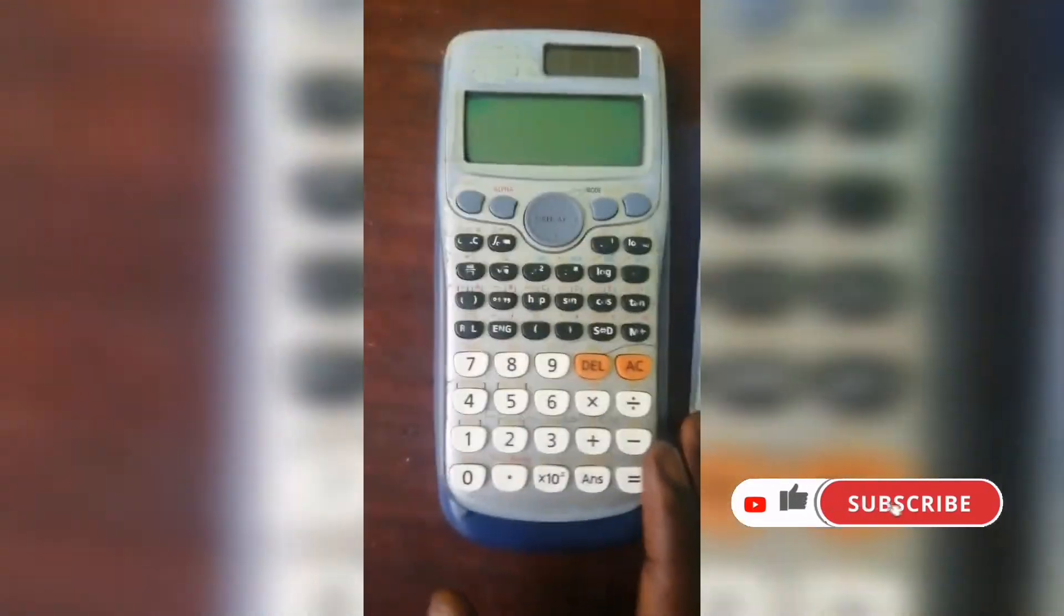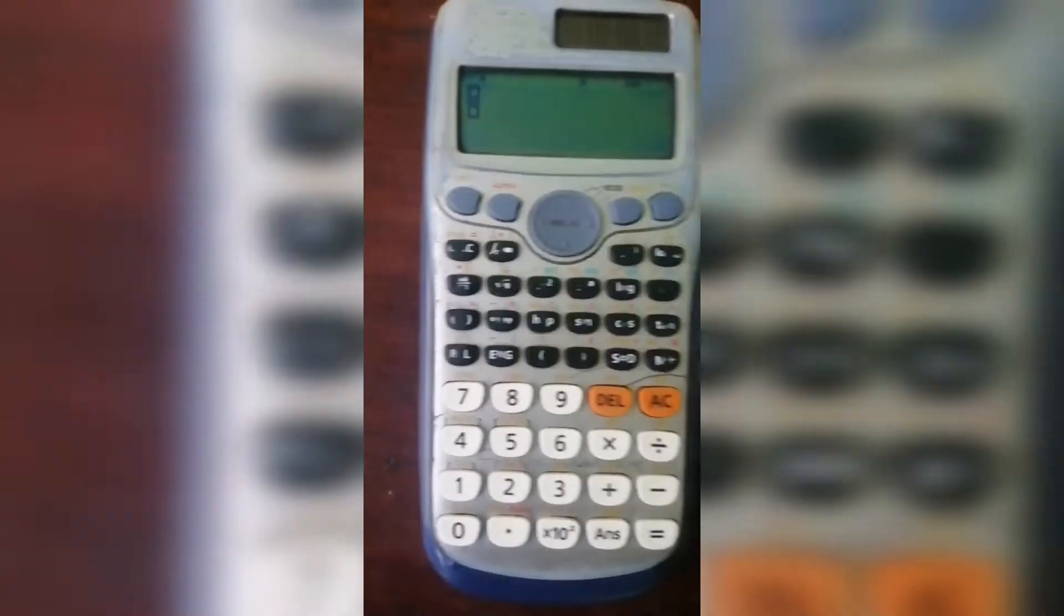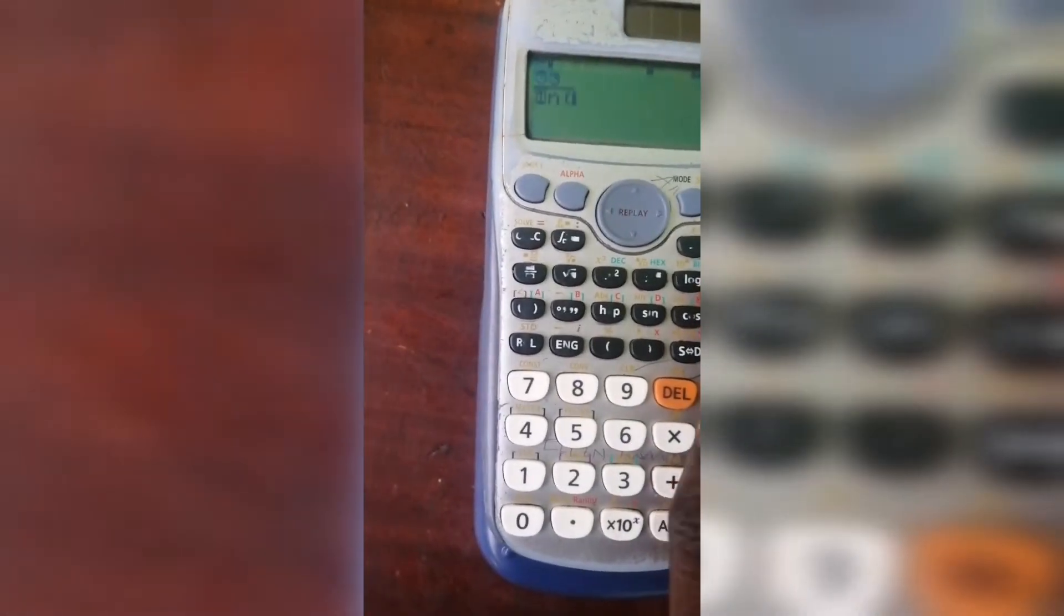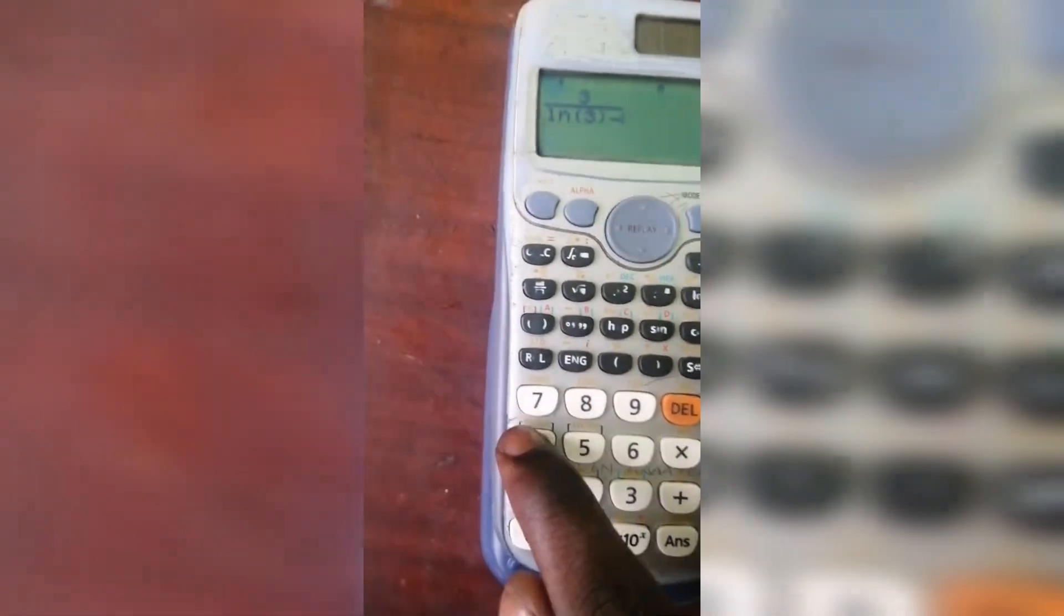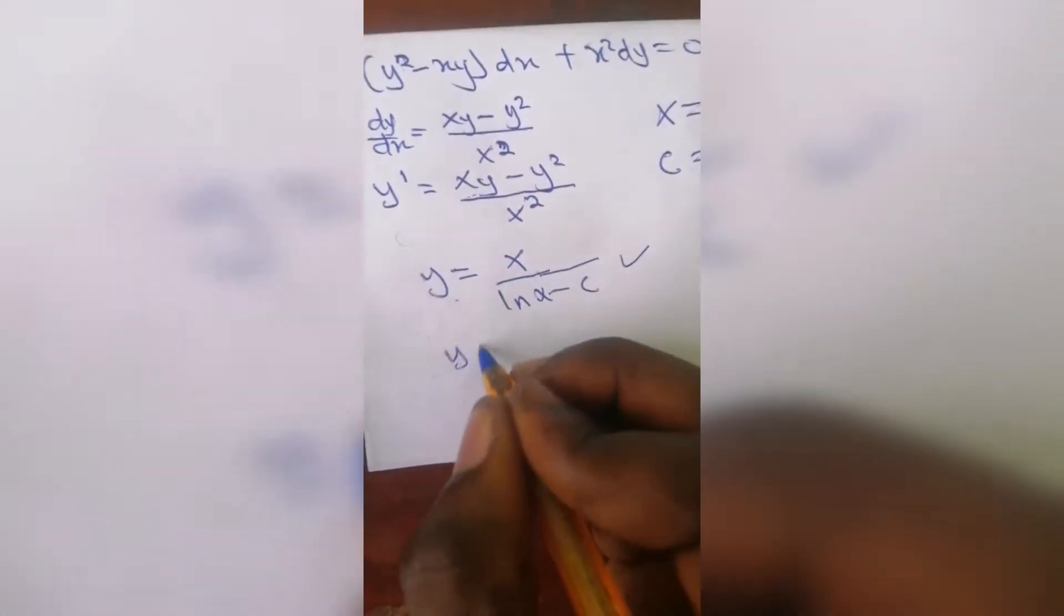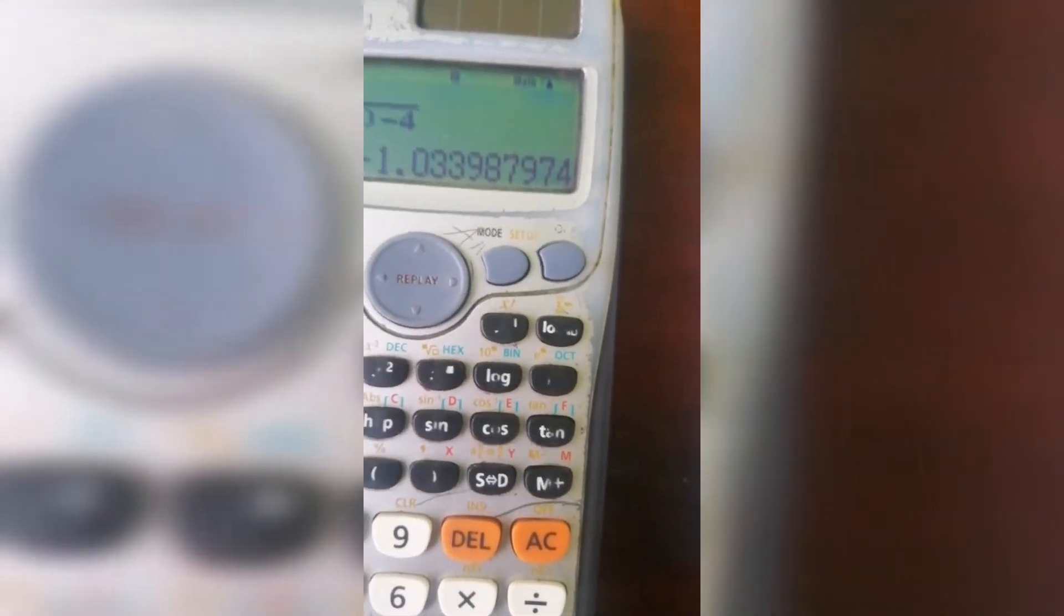Take your calculator and we are going to insert. We have x is 3 over ln 3 minus c is 4, so minus 4. The answer for y here is negative 1.03398. This is y now.